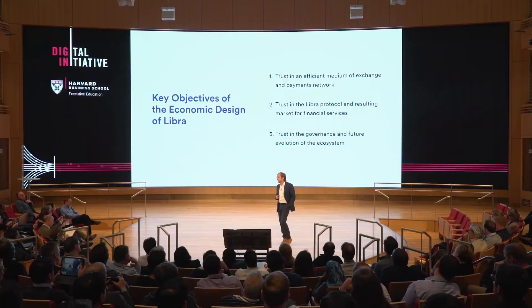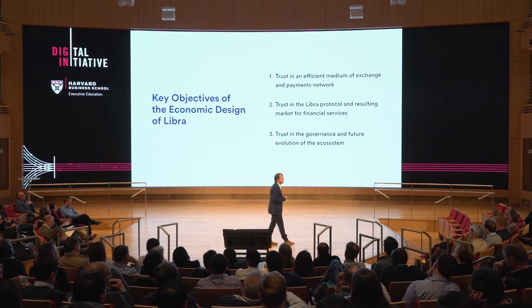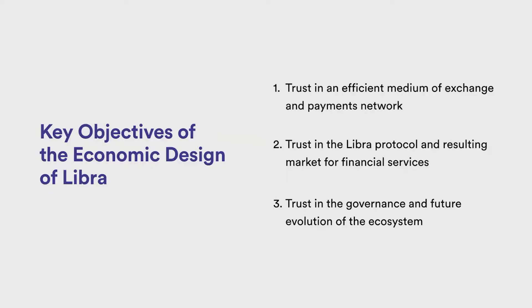Talking specifically about Libra, there were three main economic objectives in the design of the platform. The first was to encourage trust in an efficient medium of exchange and payment network — that's what people talk about when they talk about the currency. There's a second dimension of trust that has to do with everything from the protocol level up: the engineering and computer science behind it, to the marketplace and the degree of competition in financial services and payment applications on top of the network. And the last one relates to trusting the governance and future evolution of that platform over the years.